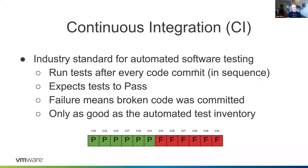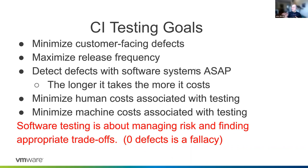So what are the goals of continuous integration? We do it to minimize customer-facing defects. You want to maximize the release frequency because the more often you ship code to customers, the more value they get. If you ship in smaller increments, it's easier to find and fix problems. You want to detect defects as soon as possible, because every study in our industry has shown that the longer it takes to find a software defect, the more it costs the organization to fix it. You also want to minimize the human and machine costs associated with testing.